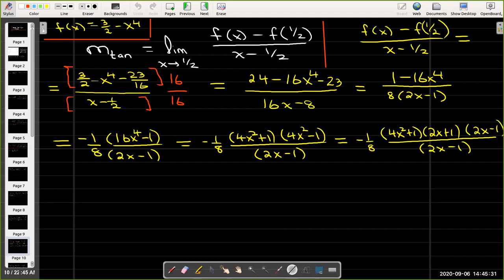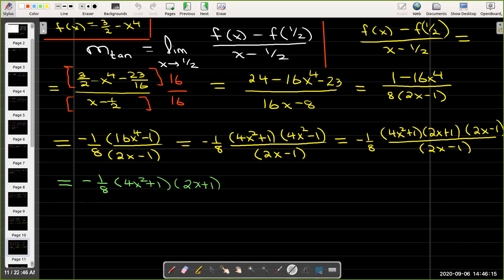So I'll go ahead and factor 16x to the power of 4 minus 1 as 4x squared plus 1 times 4x squared minus 1. And then I see that 4x squared minus 1 is also the difference of two squares, so I will factor that as 2x plus 1 times 2x minus 1. Now I see that I do have a common factor of 2x minus 1 in the numerator and denominator. So after I simplify, I'm left with negative 1/8 times 4x squared plus 1 times 2x plus 1.